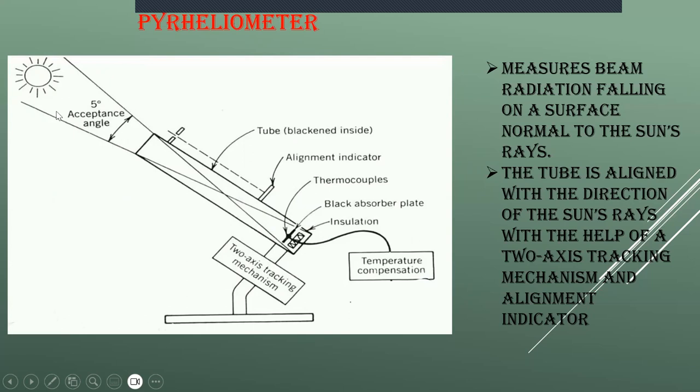The tube is aligned with the direction of sun's rays with the help of a two-axis tracking mechanism. You will have an alignment indicator. With this alignment indicator, the angle will be adjusted such that it is facing directly to the sun's rays. The black plate will receive only beam radiation and a small amount of diffuse radiation within the acceptance angle which is 5 degrees. Based on the temperature and the two-axis tracking mechanism, the complete instrument records the beam radiation that is falling across the surface of the earth. This is how your pyrheliometer is used to measure the beam radiation from the sun.